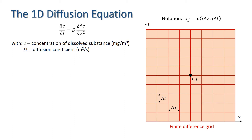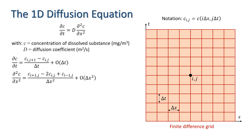We need to choose approximations to the derivatives. Since we are stepping forward in time from an initial condition, we are going to use a forward difference approximation for the time derivative, which is accurate to order delta t. For the spatial derivative, we take a central difference approximation, which is of order delta x squared. These approximations can be derived directly from Taylor series.